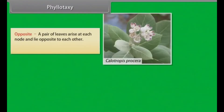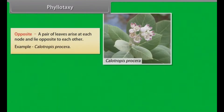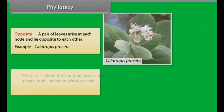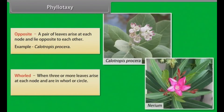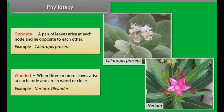In opposite phyllotaxy, a pair of leaves arise at each node and lie opposite to each other. Example: Calotropis procera. In whorled phyllotaxy, three or more leaves arise at each node and are arranged in a whorl or circle. Example: Nerium oleander.